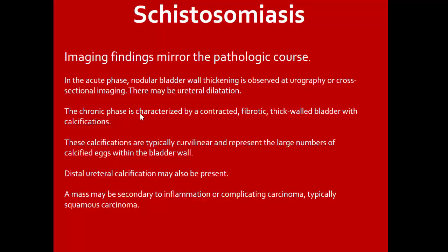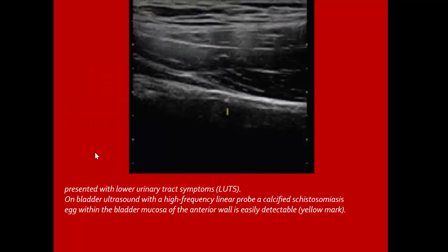Schistosomiasis is one cause of infectious cystitis. Imaging findings mirror the pathologic course. In the acute phase: nodular bladder wall thickening observed at urography or cross-sectional imaging. Chronic phase is characterized by a contracted fibrotic thick-walled bladder with calcification — typically curvilinear, representing calcified eggs within the bladder wall. Urethral calcification may also be present. A mass may be secondary to inflammation or complicating carcinoma, typically squamous carcinoma. Case presented: bladder ultrasound shows calcified schistosomiasis eggs within the bladder mucosa, anterior wall — easily detectable.